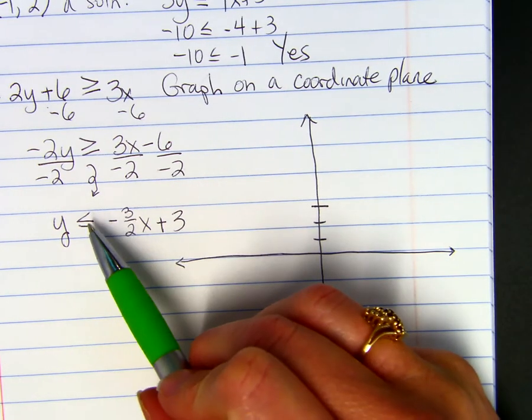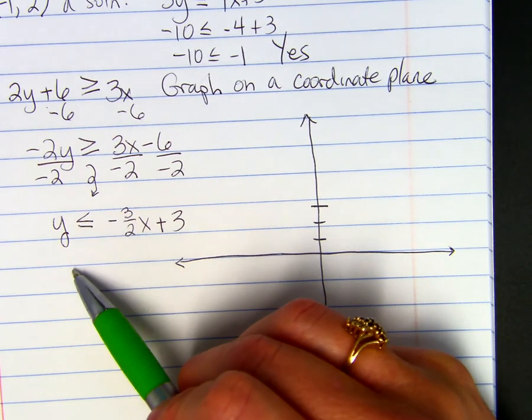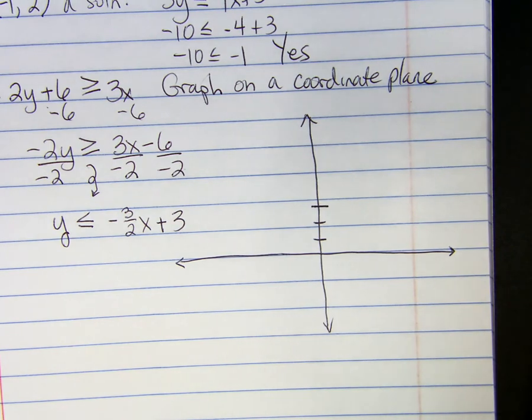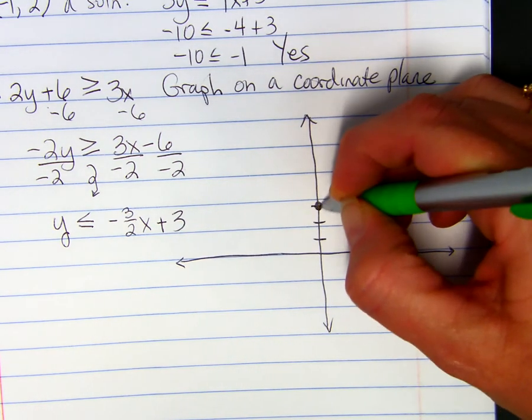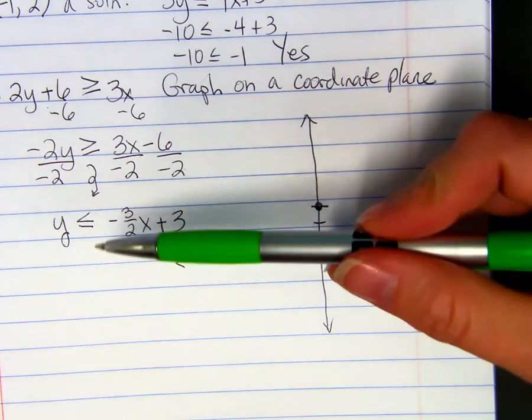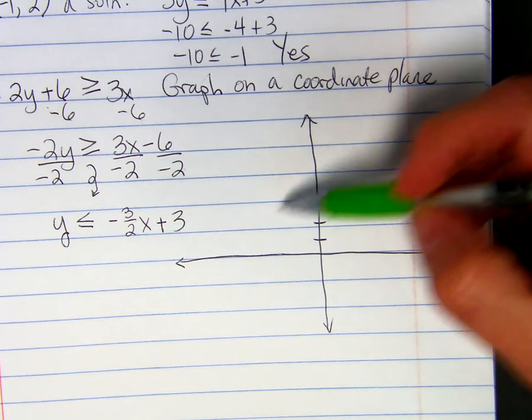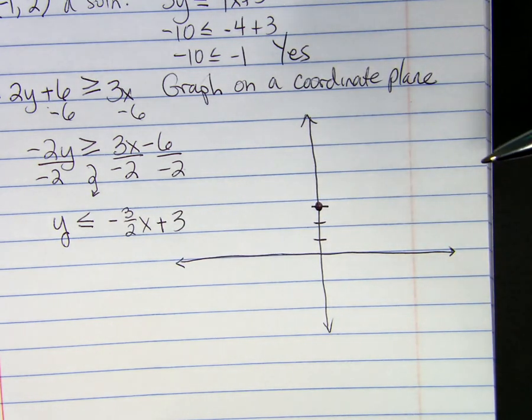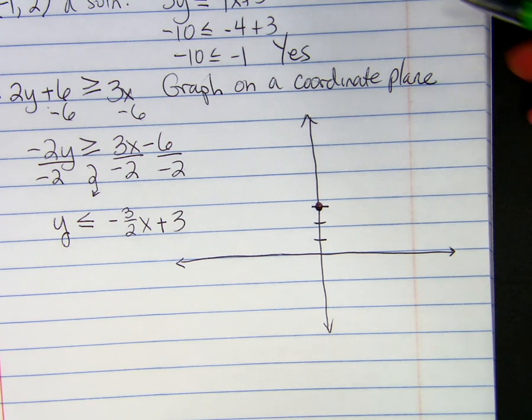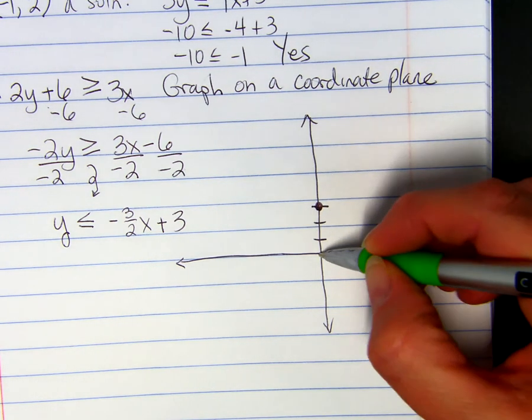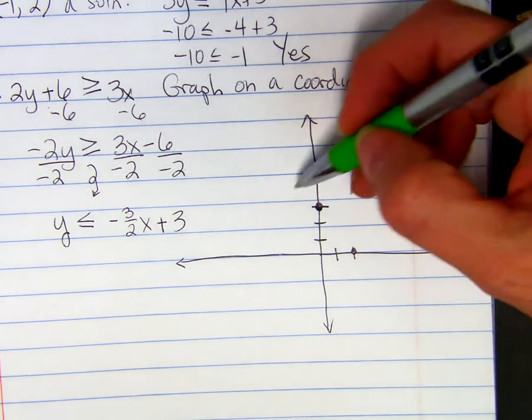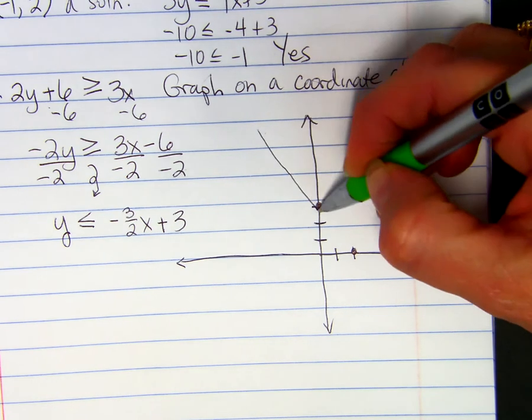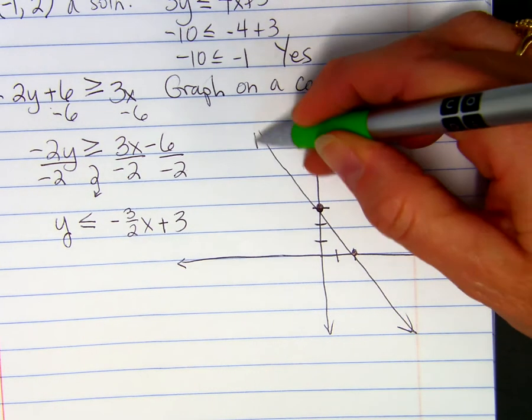Yes. If you have a greater than or equal to, your line will be solid. Solid. So when I go to my y-intercept 3, I'm going to put a solid circle there. If it did not have the or equal to, I would put an open circle there. The slope is negative 3 halves, so I'm going to go down 3 and to the right 2 so that I can get a negative slope.